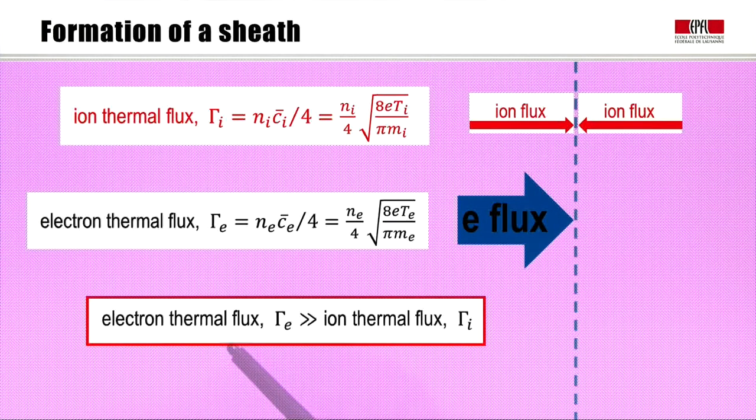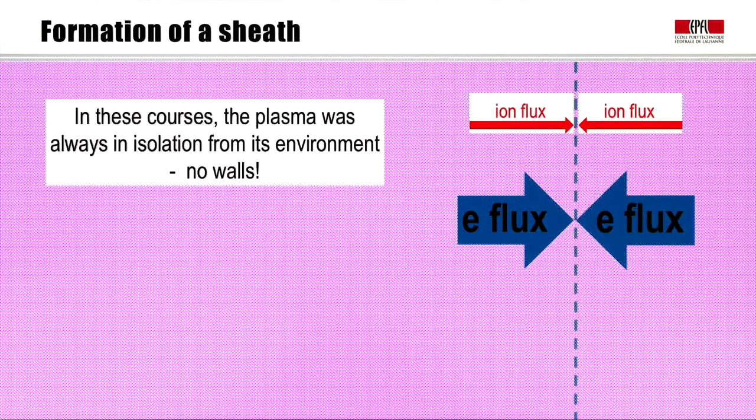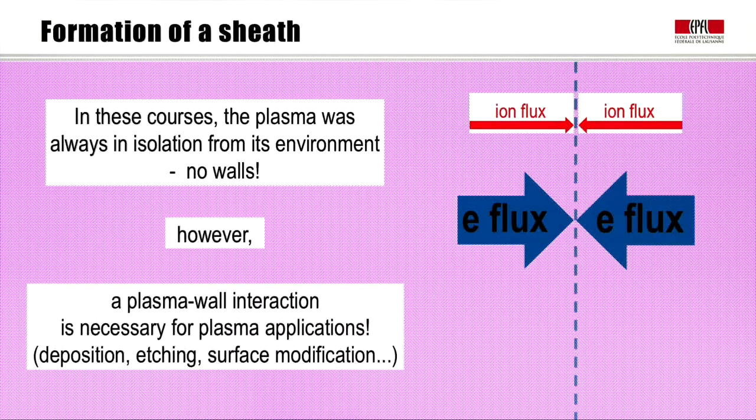To resume, the electron thermal flux is much bigger than the ion thermal flux. Of course there is an equal and opposite electron flux crossing this same surface. In all the courses up till now, the plasma has always been considered in isolation from its environment. However, if you want to make any devices, any plasma applications, then a plasma wall interaction will be necessary because it's the only way you can make deposition, etching or surface modification.